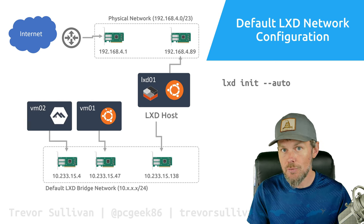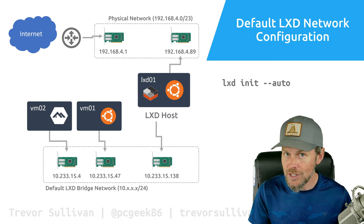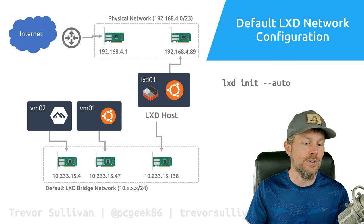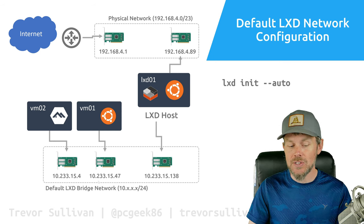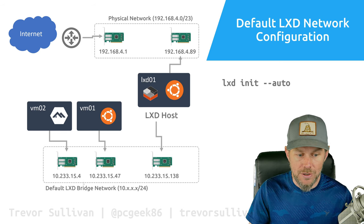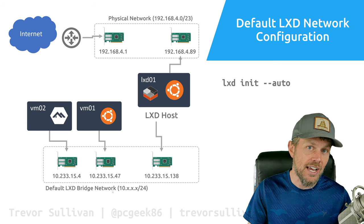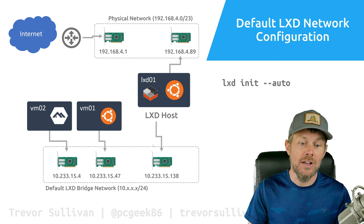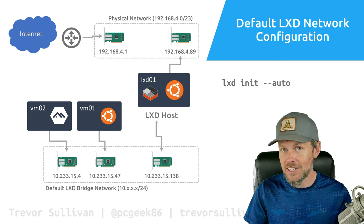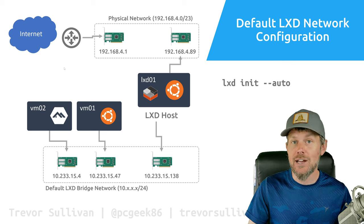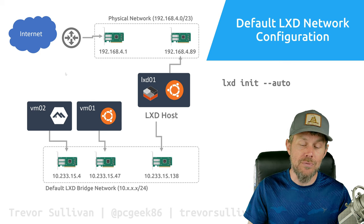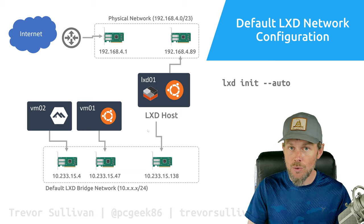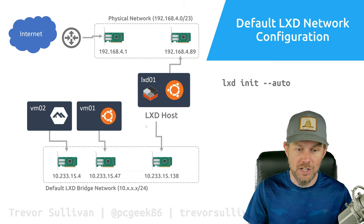When you create additional virtual machines — whether running Windows, Ubuntu Linux, or Alpine Linux — they all get attached by default to this bridge network and each receives a unique IP address, allowing outbound communication with the LXD host and the outside world. But if you have any inbound traffic coming into those virtual machines, we're going to have to find some other way to accomplish that.